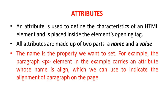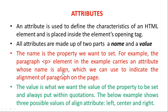In the paragraph P element example, we align the content using the align attribute. We can set the alignment to the left side, center alignment, or right side alignment. The attribute name is 'align' and the value can be left, center, or right. The value defines what we want the property to be set to, and it is always put within quotation marks.